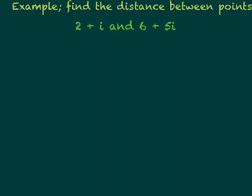So for some examples, find the distance between the two complex points. In the first one, we have 2 plus i and 6 plus 5i. That means our X sub 1 is 2, and our Y sub 1, which is the imaginary part of our first point, is 1. Our X sub 2 is 6, the real part of the second one, and the imaginary part of the second one, Y sub 2, is 5.